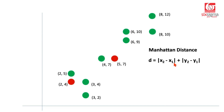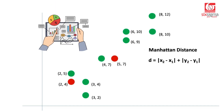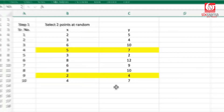So the Manhattan distance formula is |x2 - x1| + |y2 - y1|, taking absolute values and not considering the sign. This will be better understood with the help of data, so let me show you the data.